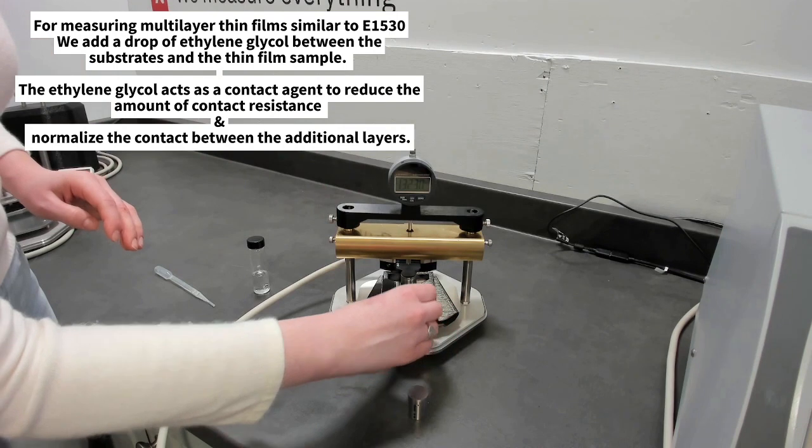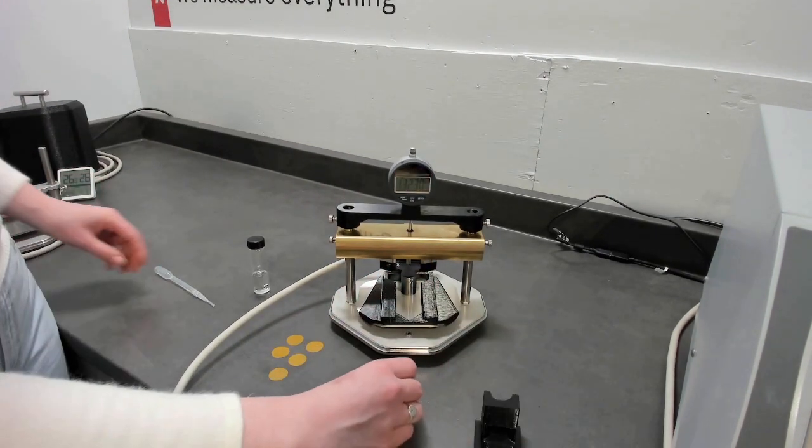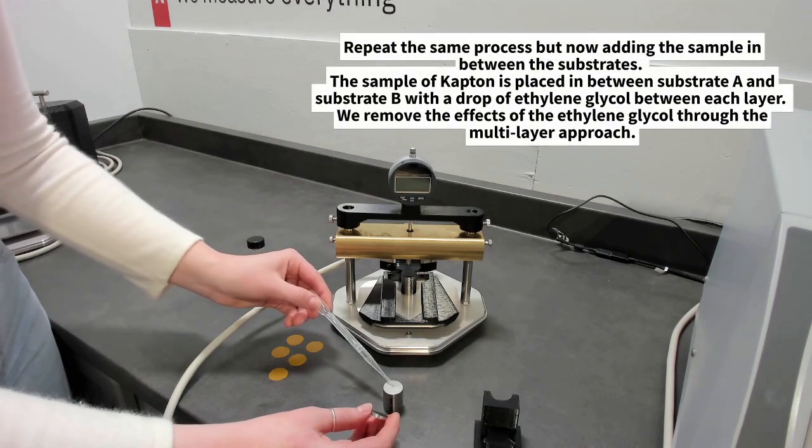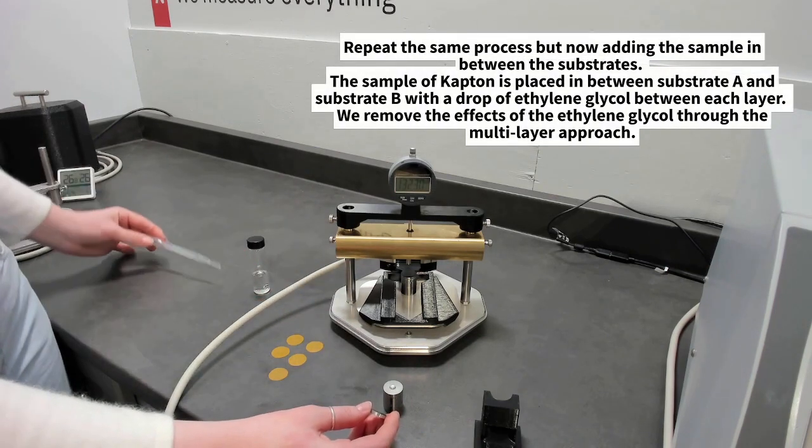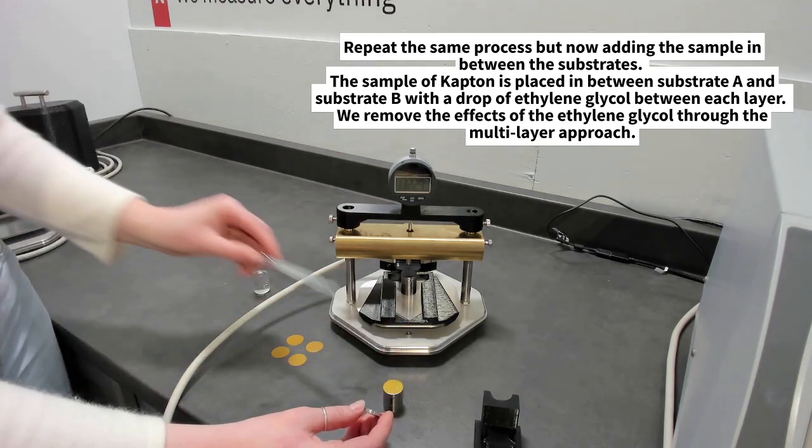Repeating the process by adding one layer of thin film, in this case it's a Kapton, to the bottom. We're measuring these symmetrically so it's a mirror of what's on the bottom on top. One drop of ethylene glycol.